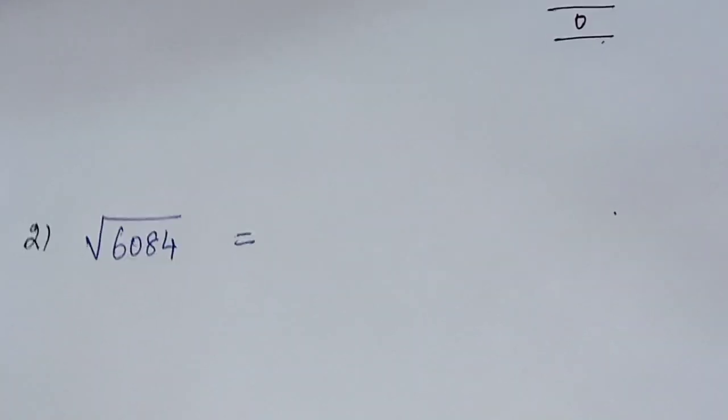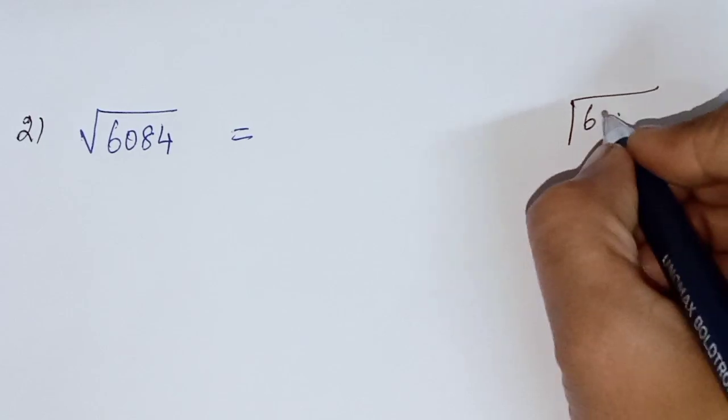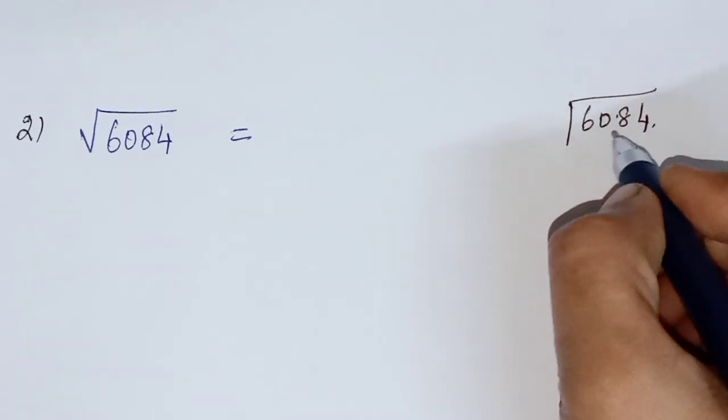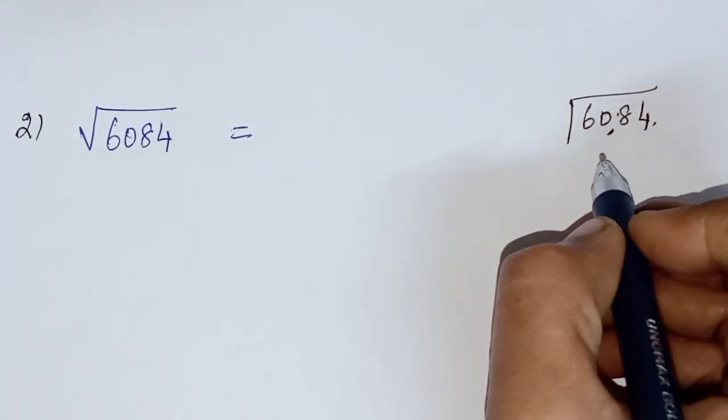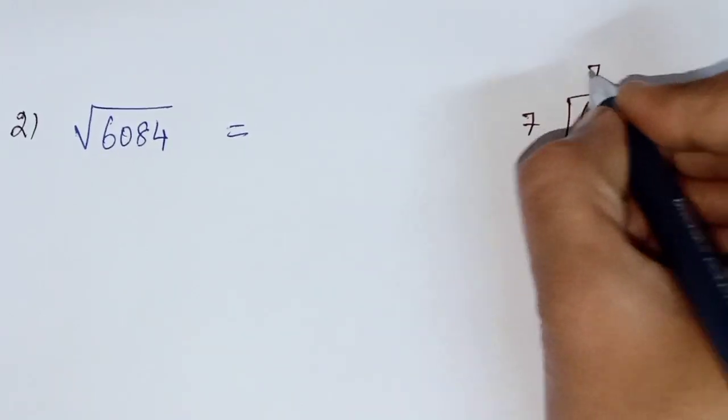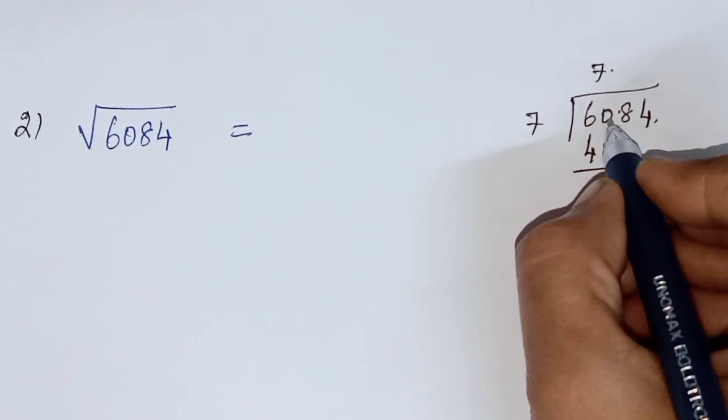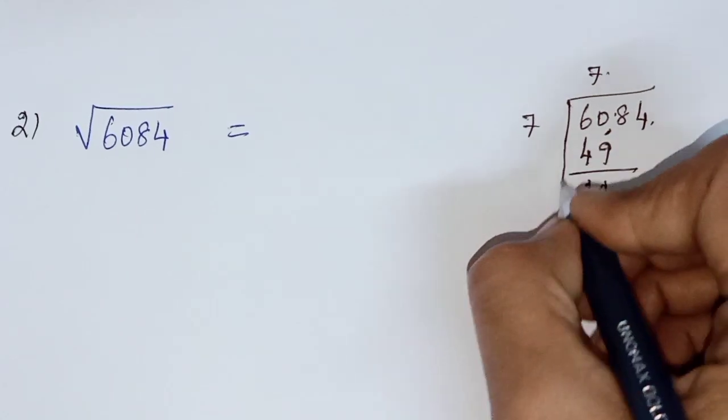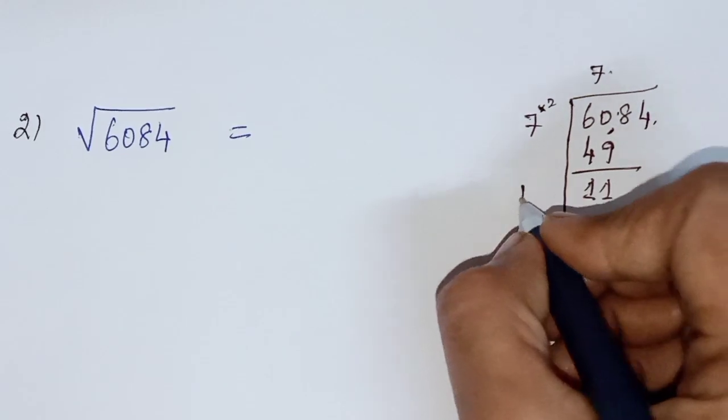And next sum, square root of 6084. So 6084. So square root is 60. So 7, 7s are 49, 8, 8s are 64. So 7, 7s are 49. Remaining 60 minus 49, subtract method 11. Subtract and multiply 14.